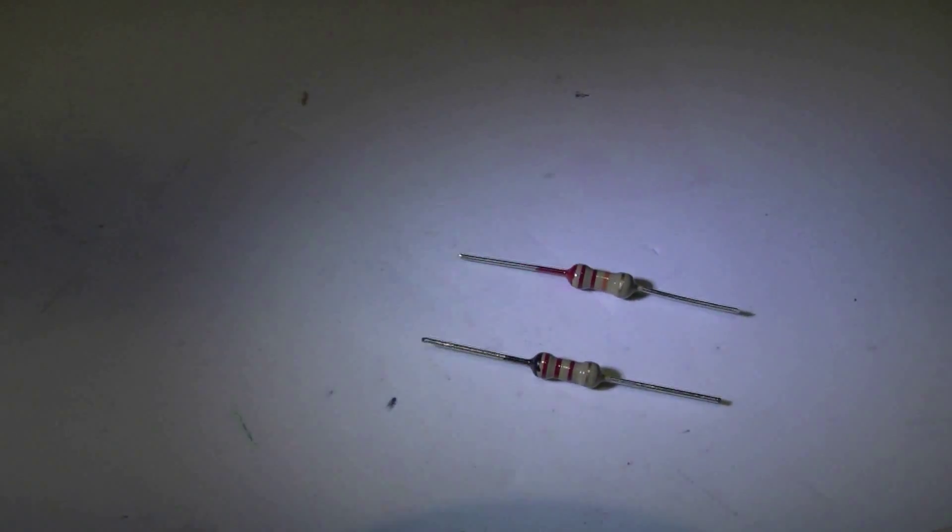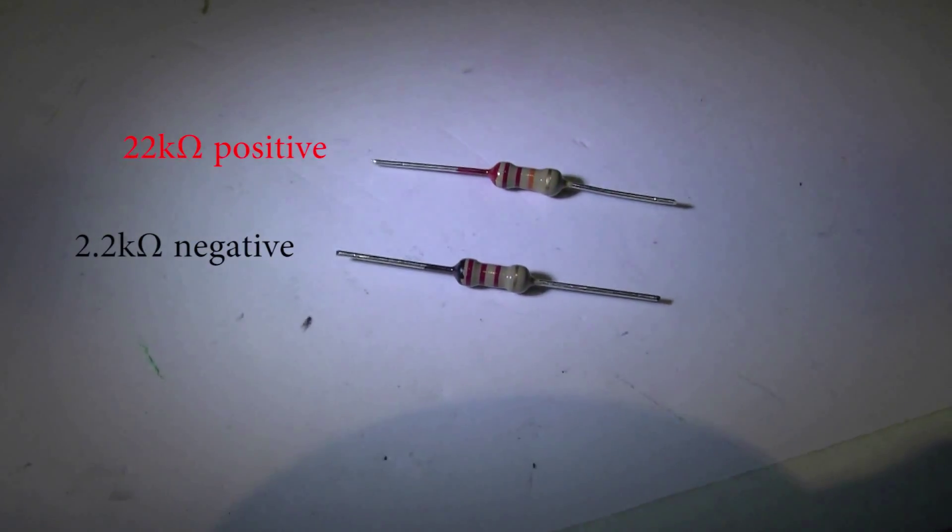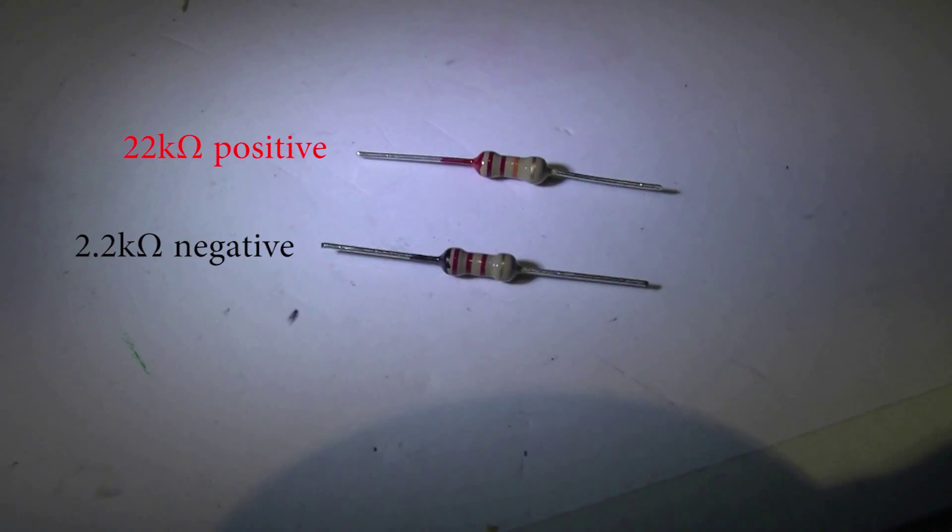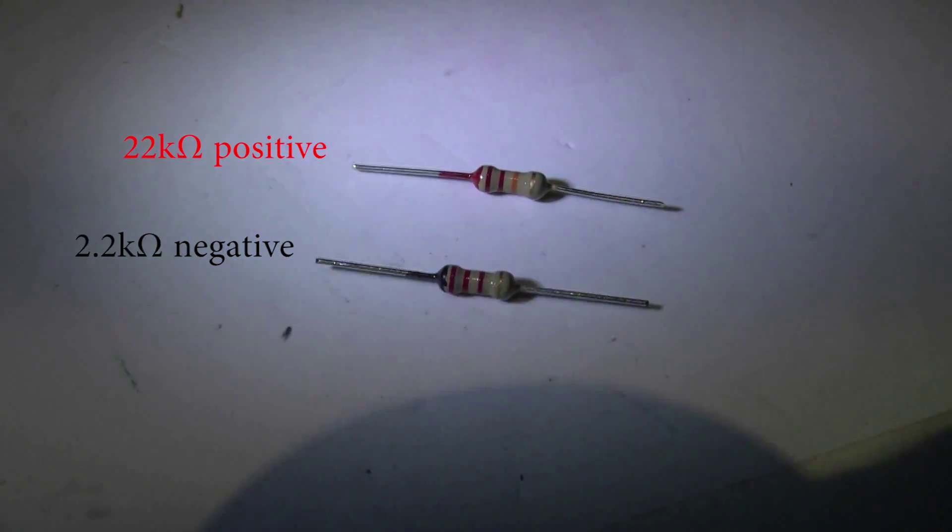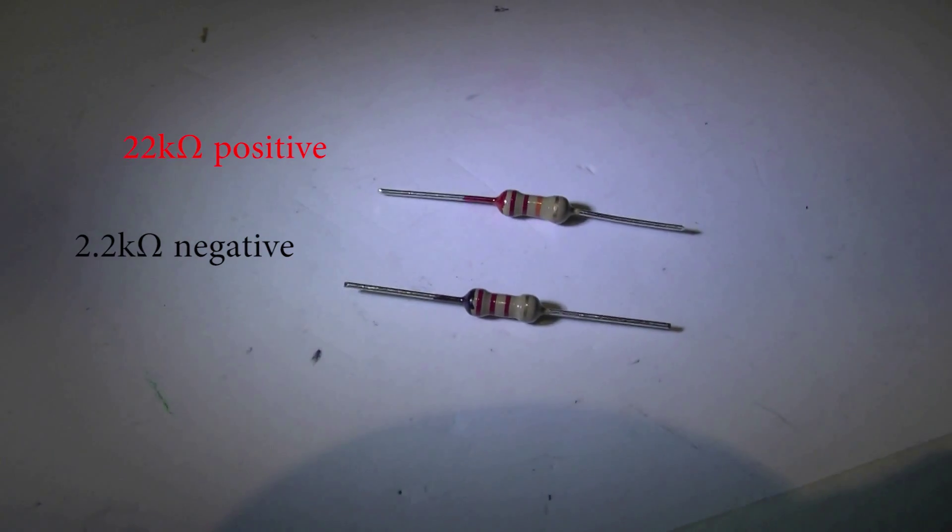Now the negative one is a 2.2K resistor which is the lower one you can see, and the top one which is the positive which is a 22K resistor.